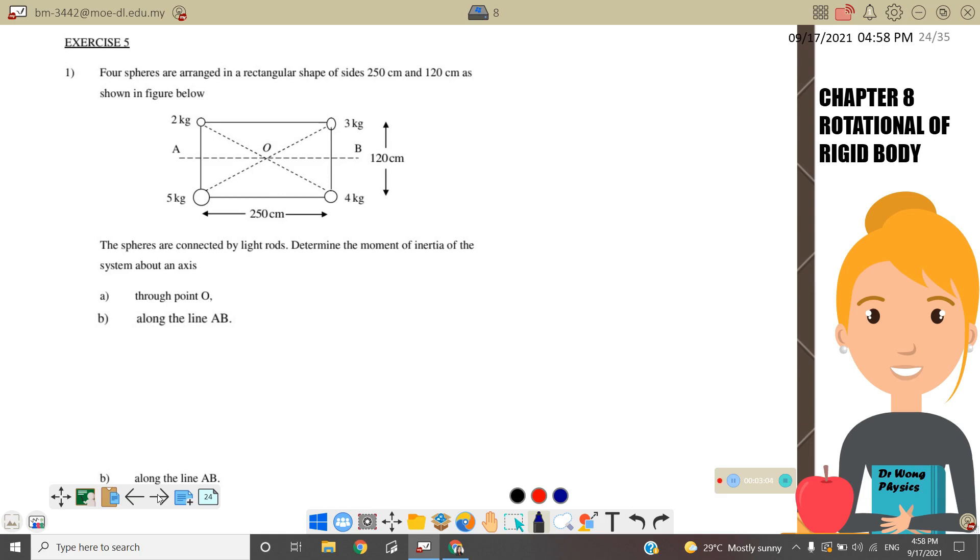Exercise 5: Four spheres are arranged in a rectangular shape with sides 250 cm (2.5 meters) and 1.2 meters as shown, with spheres 1, 2, 3, and 4. The first problem is to determine the moment of inertia of the system about an axis through point A. This is the rotation axis.